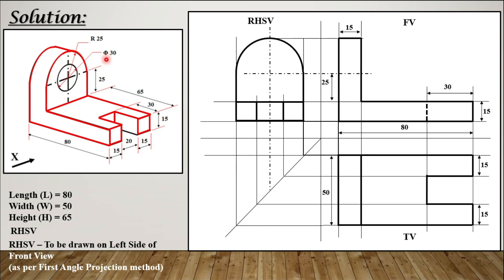Now drawing the inside circle, which is concentric with the outer semicircle. The diameter is 30 mm, so the radius is 15 mm. Setting the compass to 15 mm radius, keeping the compass at the same center, and completing the full circle — the circle is visible in the side view, so it is drawn as a solid line. The side view is now complete.